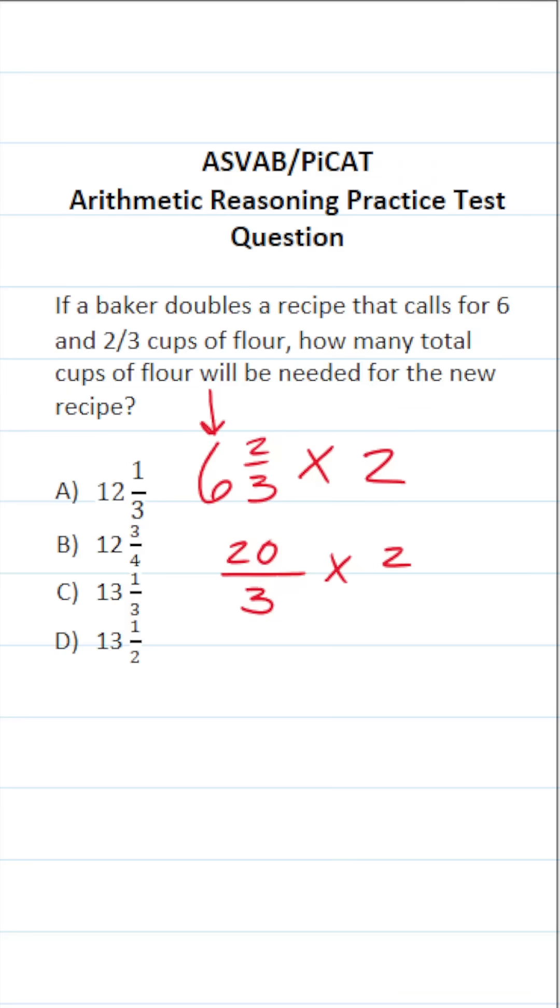Now I can rewrite two to be a fraction by placing it over one. And when you multiply fractions, you just multiply straight across. In other words, this becomes 20 times two over three times one. 20 times two is 40. Three times one is three.